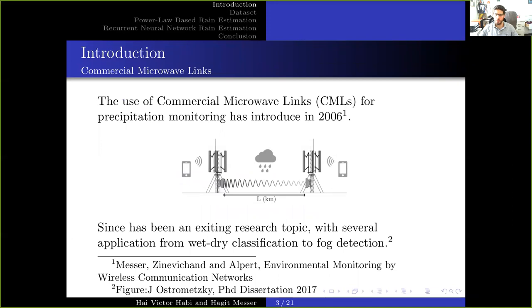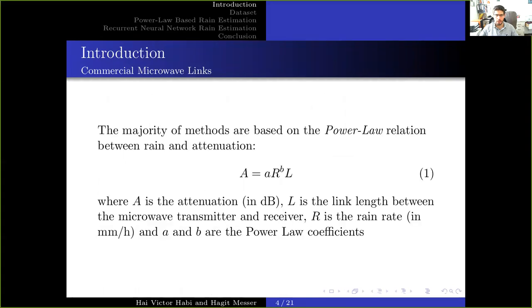The use of commercial microwave links for precipitation monitoring was first introduced in 2006 by Messer et al. The idea is to use the information provided by the attenuation in microwave signals to measure precipitation. Since first presented, this has been an exciting research topic with several applications, from wet-dry classification to fog detection. The majority of methods are based on the power law relation between rain and attenuation, as shown in equation 1.